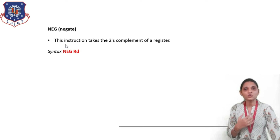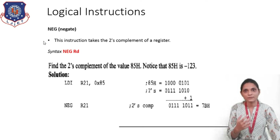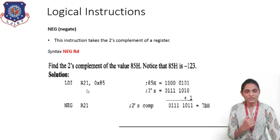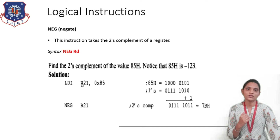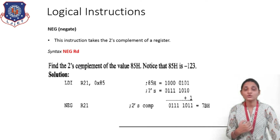Next is the NEG instruction — this performs the 2's complement. In the COM instruction you perform the 1's complement, while in the NEG instruction you perform the 2's complement of the register content. The syntax is NEG Rd. For example, LDI R21, 0x85 stores 85 in R21. Then NEG R21 performs the 2's complement of R21. To find the 2's complement we write the bit pattern, perform 1's complement by replacing 1s with 0s and 0s with 1s, then add 1. The result is 7D, so the content of R21 is replaced by its 2's complement, 7D.